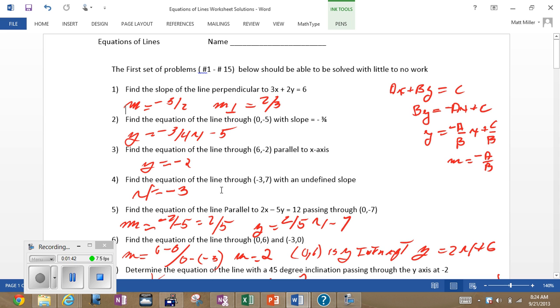Or, which is, of course, a vertical line, which will always be of the form X equals something. In this case, X equals negative three.